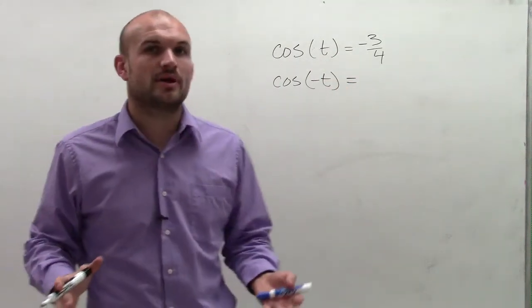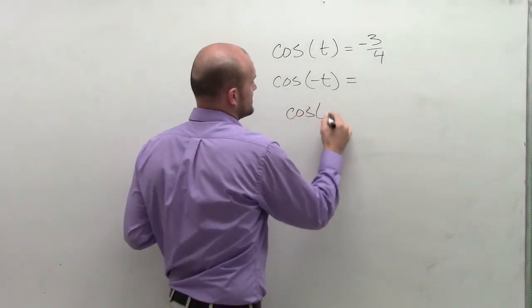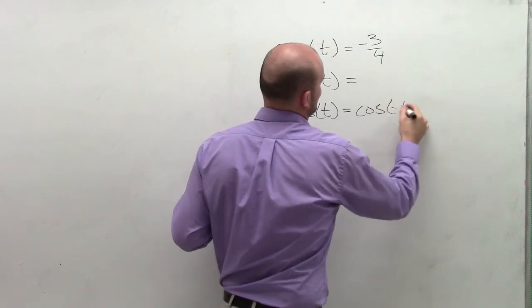So there's a couple things we want to remember before we do this. The first thing we want to remember is the cosine function, cosine of t, is equal to the cosine of negative t.